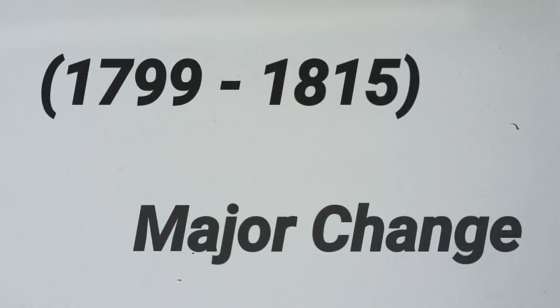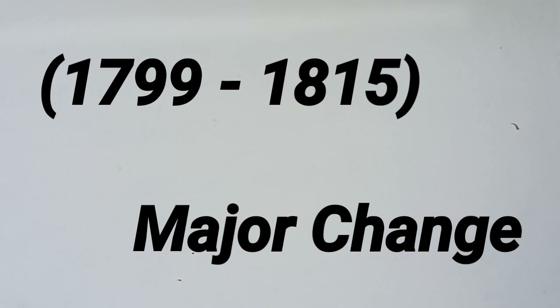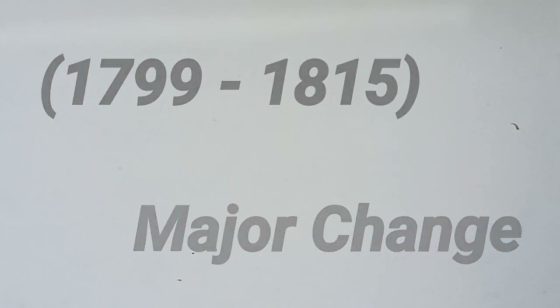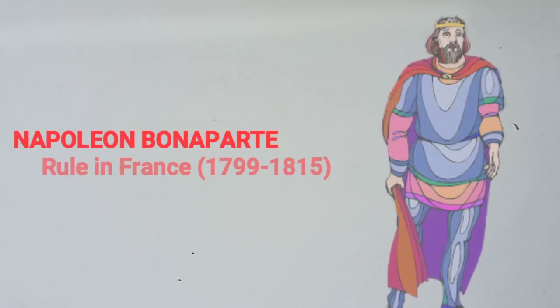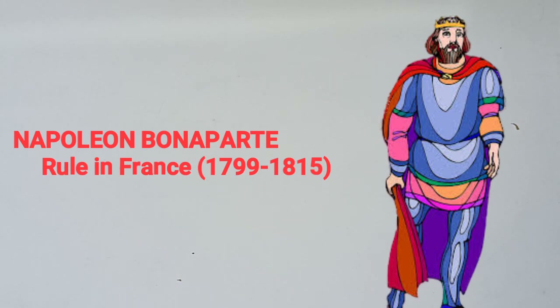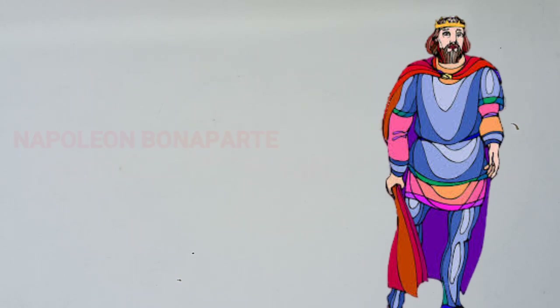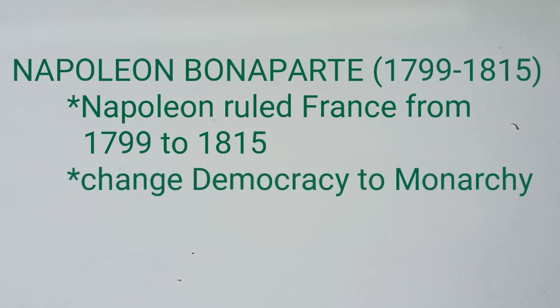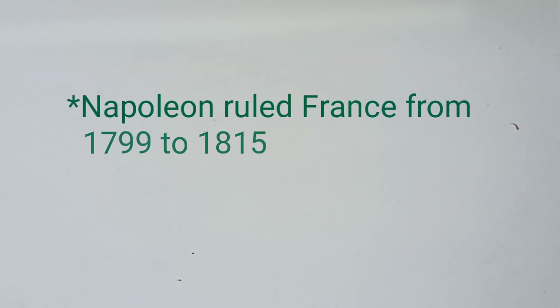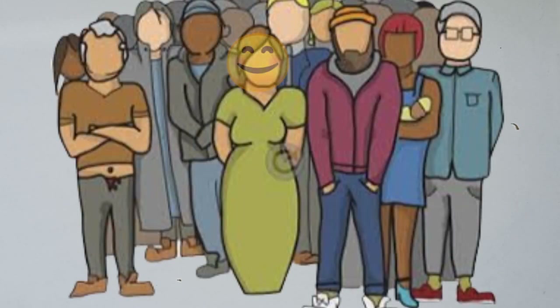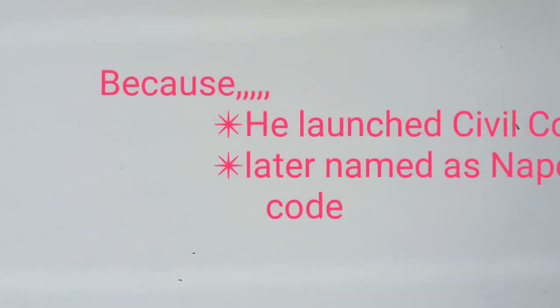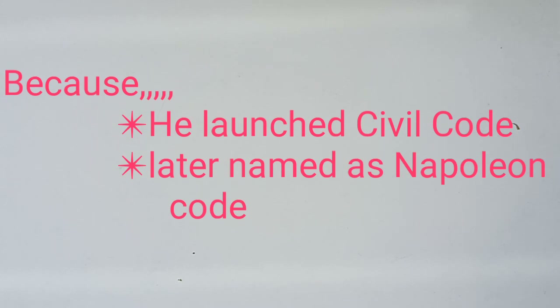Now, from 1799 to 1815, there was a big change in France. Napoleon invaded France and moved away from the democracy system back to a monarchist system. France accepted this, and Napoleon launched a civil code, which was known as the Civil Code. This code contained many things that were very useful.